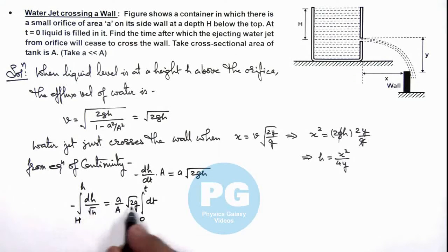Now if we integrate this term we can see this will give us 2×root(h), and we put the limits from H to small h with a negative sign, is equal to (a_y/A_y) × root(2g) × t.